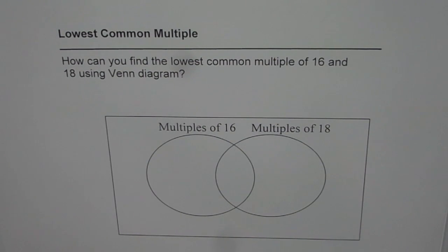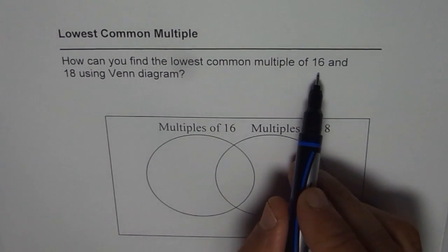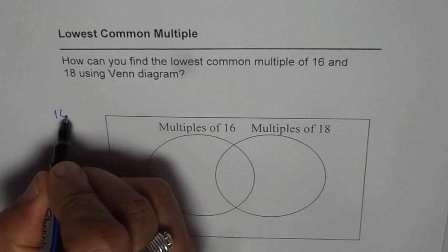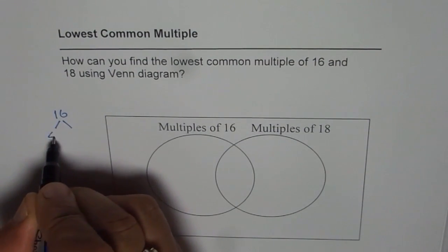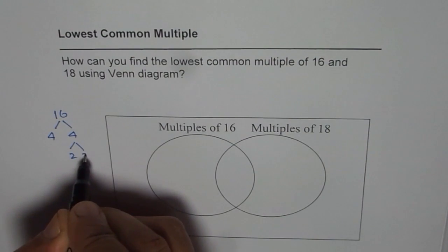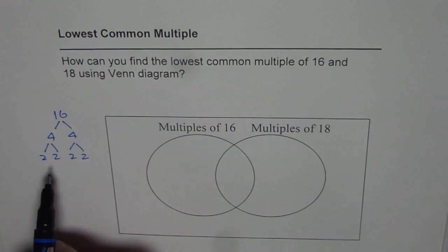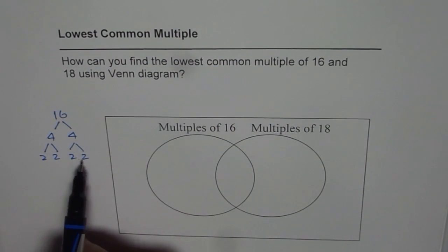Prime factorization. We'll find the prime factors of both 16 and 18. Let's begin with 16. So 16 is 4 times 4, and 4 is 2 times 2, and this is also 2 times 2. So we have 16 as 2 times 2 times 2 times 2.